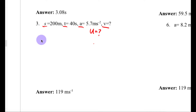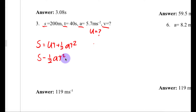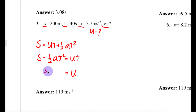Starting with S, T, A, and U, the equation that connects those is S equals UT plus one-half AT squared. To isolate U, I'll subtract the one-half AT squared term from both sides, giving S minus one-half AT squared equals UT. Then dividing both sides by T gives U equals the quantity S minus one-half AT squared, all over T.